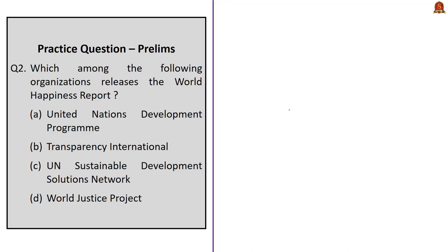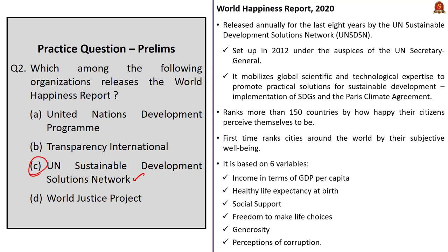This question is about the World Happiness Report. The question asks who releases this report. The correct answer is Option C — UN Sustainable Development Solutions Network, or UN SDSN. This organization releases the report annually. UN SDSN was set up in 2012 under the auspices of the UN Secretary General. It mobilizes global scientific and technological expertise to promote practical solutions for sustainable development and oversees implementation of the Sustainable Development Goals and the Paris Climate Agreement.